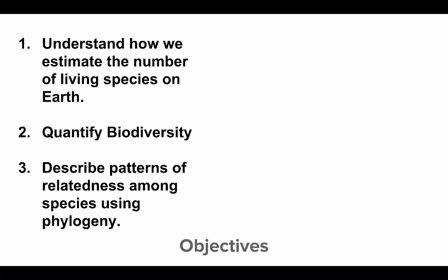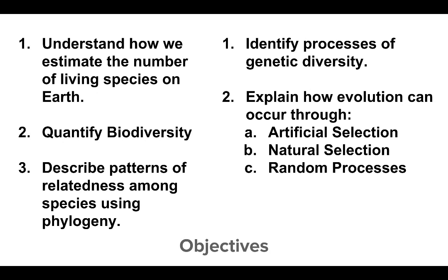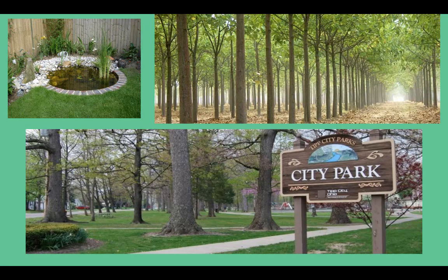In this lecture, we're going to look at two different things. We're going to look at biodiversity and see how it determines the number of living species and how we estimate the number of living species on Earth. We're going to use the phylogeny, which you've covered in your biology class, and also review evolution. We're going to look at the processes of genetic diversity as well as the three main ways evolution happens: through artificial selection, natural selection, and random processes.